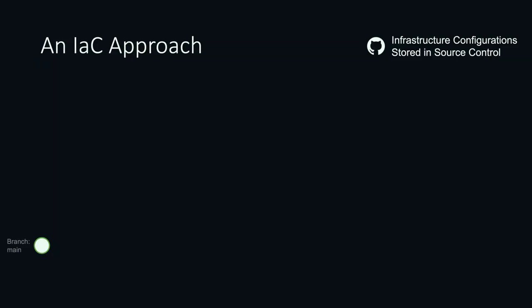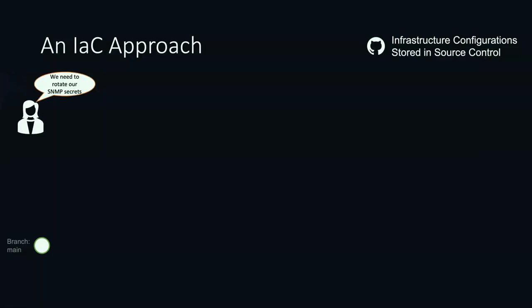We do everything from the main branch — the main branch is everything that's in production. Same scenario, time to rotate secrets — pull it in. This time, we're using automation, so I should be able to get this done by the end of the day.